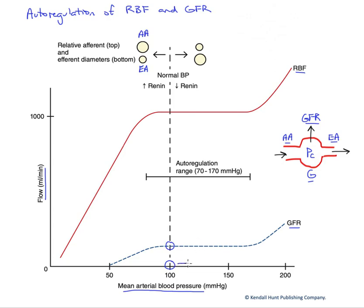If we tend toward a more hypertensive state — shifting right on the graph — PC would rise. In response to that rise in driving pressure, the afferent arteriole especially undergoes a myogenic reflex. The smooth muscle in the wall of the afferent arteriole, in response to increased distension due to higher pressure, constricts, producing a smaller diameter. Additionally, the efferent arteriole through separate mechanisms actually dilates. So we restrict inflow, dropping capillary hydrostatic pressure, and allow GFR to remain relatively stable even as blood pressure rises.